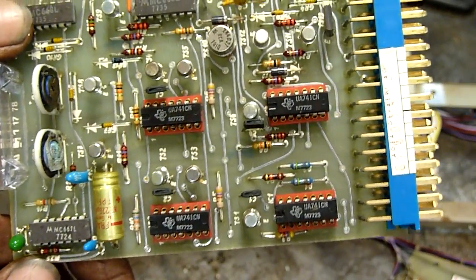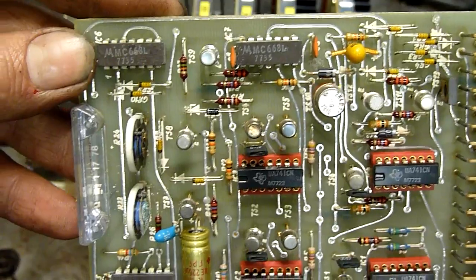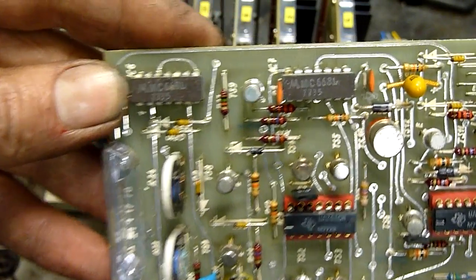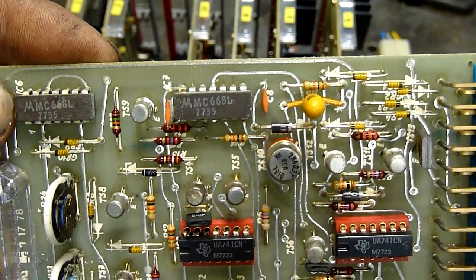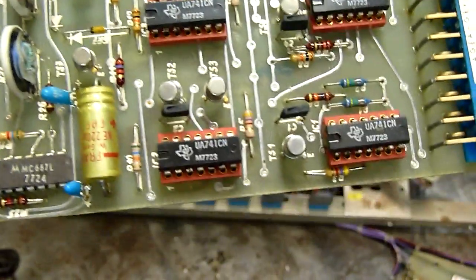Thanks for all the info on identifying these ICs, I probably should have just googled them myself, but it's more fun to actually get the viewers to interact. The MC668Ls, apparently operational amplifiers.